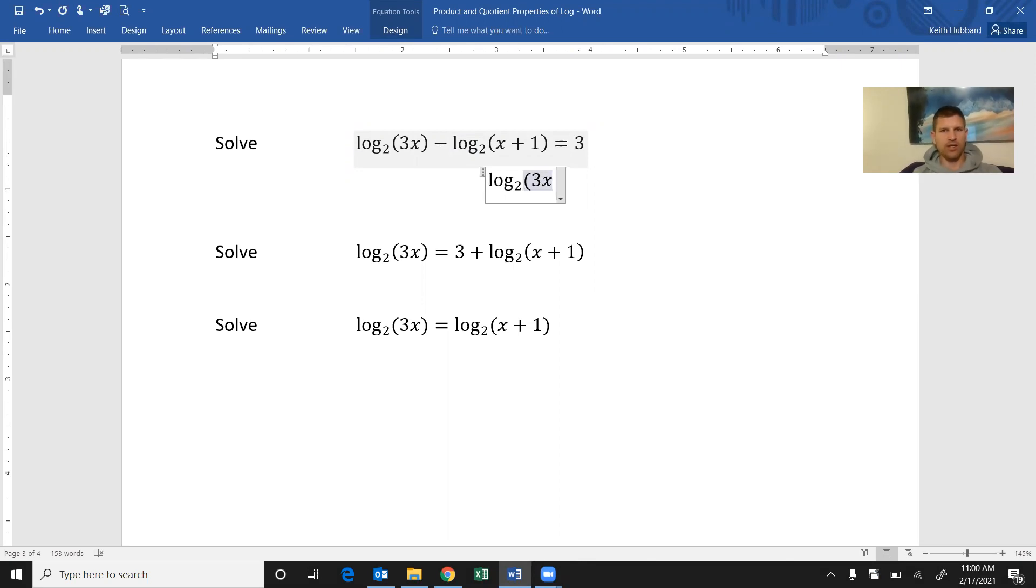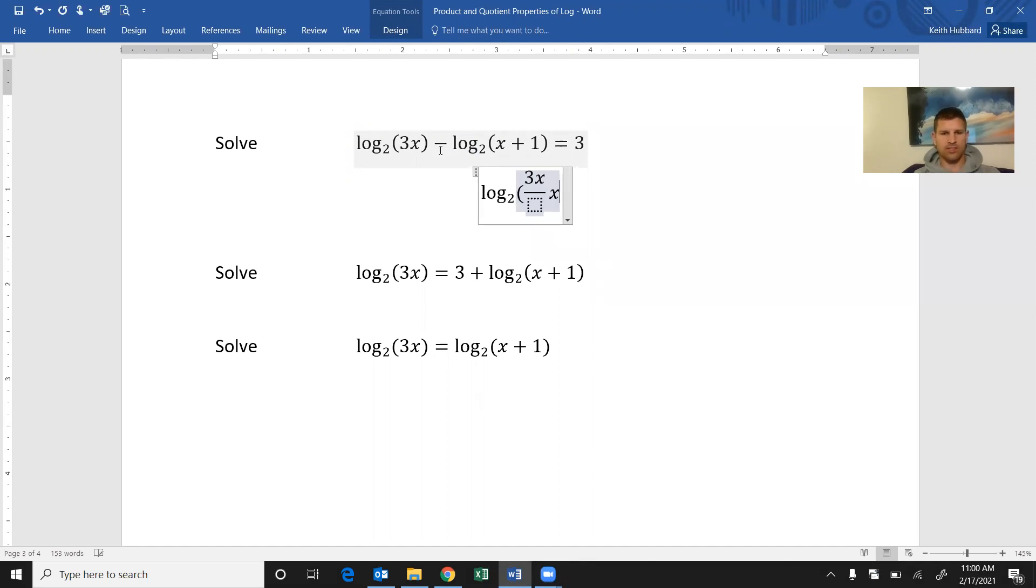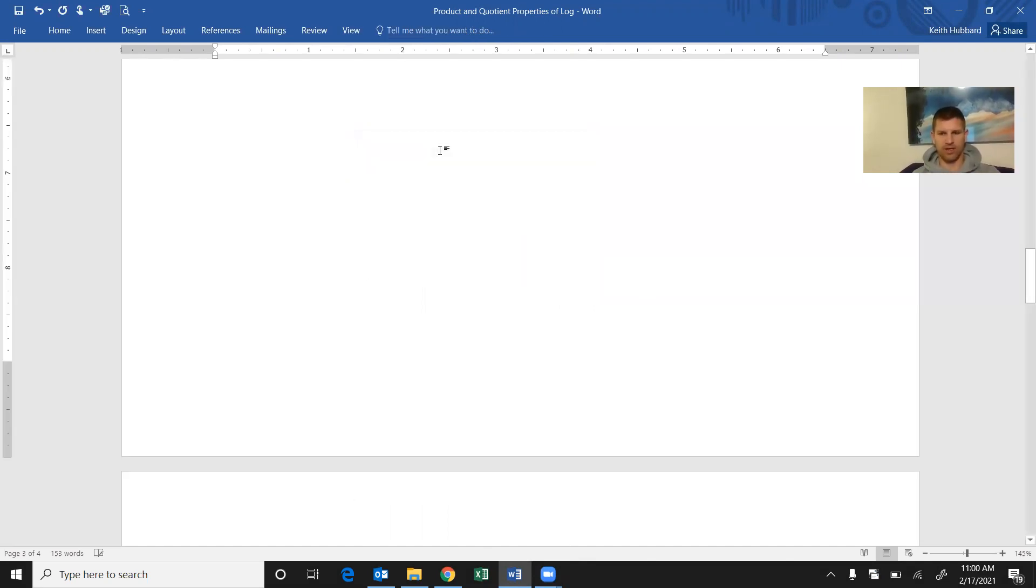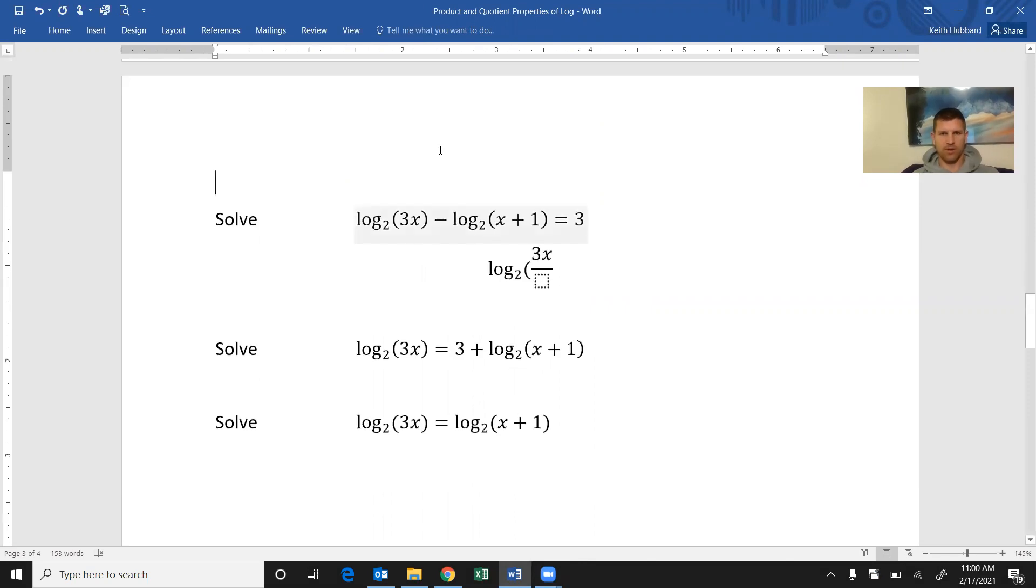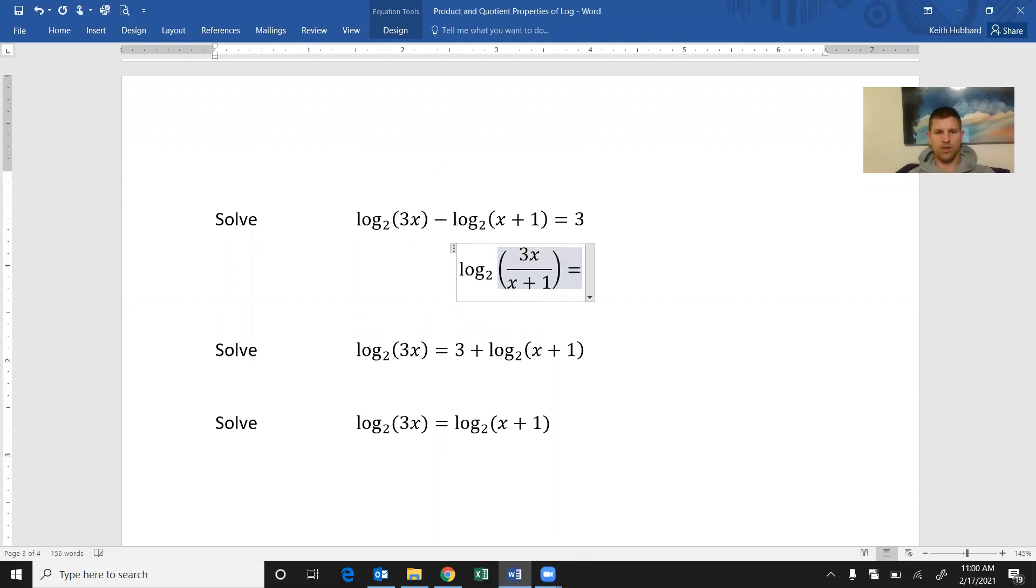You divide 3x divided by x plus 1. This is using the quotient rule equals 3.